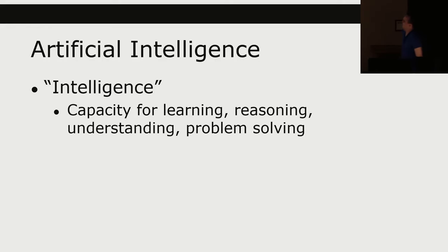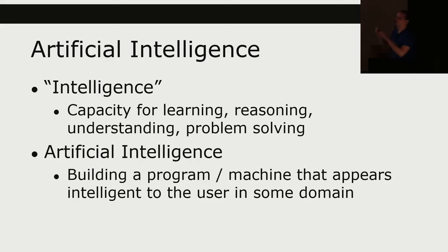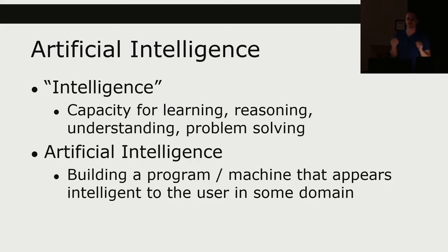Artificial intelligence nowadays doesn't really mean the intelligence is artificial — the artificial part usually means it doesn't come from a living being. Dogs, cats, ferrets are intelligent. Artificial intelligence historically has meant it's not a human making the intelligence. But if a computer beats you at chess, that's real intelligence that beat you. It means building a program or machine that appears intelligent to the user in some domain — intelligence is a subjective thing.